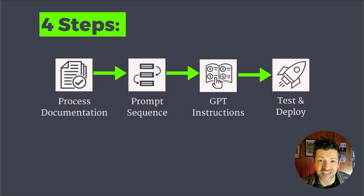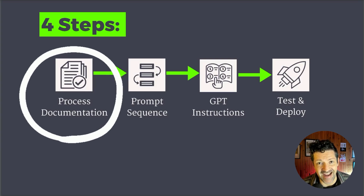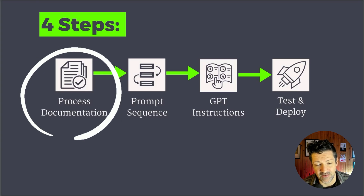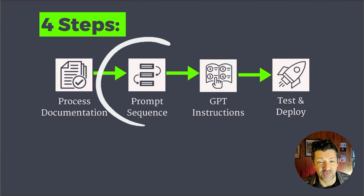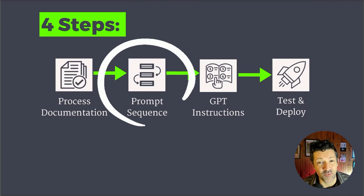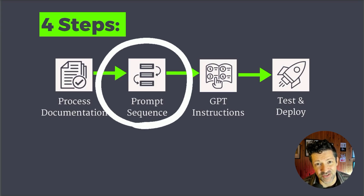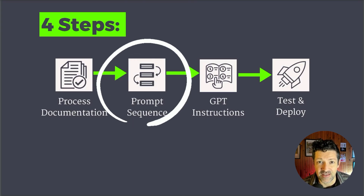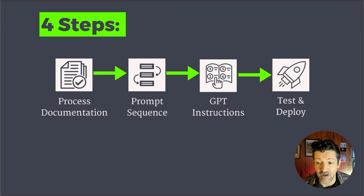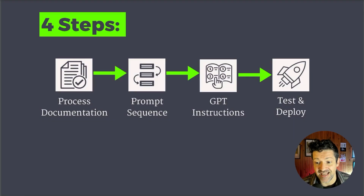These are the basic four steps for taking any process and turning it into a custom GPT. It starts with documenting your process — we're going to get into some really cool ways to use AI to help us do that, which was not included in the last video. From there, we create the prompt sequence, and this was the major breakthrough: using AI to actually create these prompt sequences effectively. Then we create our GPT instructions — I have a bot that automatically does that — and finally we're off to testing and deploying.